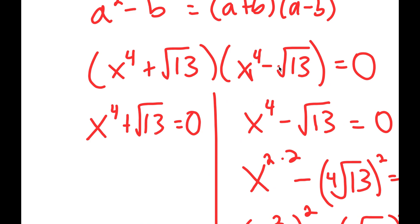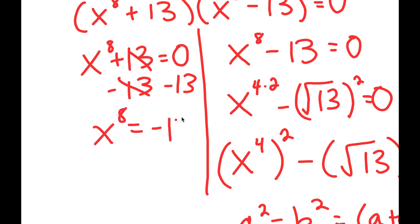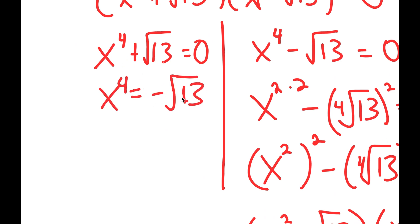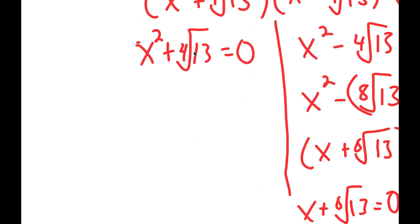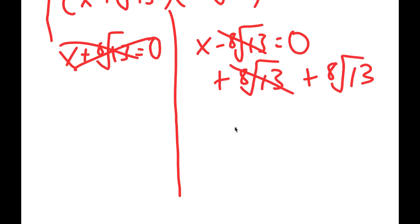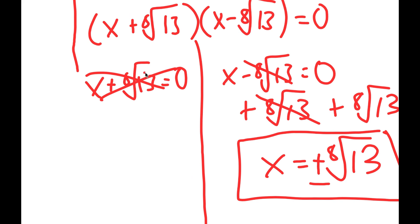Going back to x to the power of 8 plus 13 equals 0: subtracting 13 gives x to the power of 8 equals negative 13, and you can't raise a real number to a power and get a negative result, so this has no real solution. Similarly, x to the power of 4 plus the square root of 13 equals 0 gives x to the power of 4 equals negative square root of 13 — no real solution. The same applies to x squared plus the fourth root of 13 equals 0, and x plus the eighth root of 13 equals 0. So I'm left with x minus the eighth root of 13 equals 0, giving x equals the eighth root of 13, or positive and negative eighth root of 13. Those are my two real solutions. Although the eliminated equations have no real solutions, they do have imaginary solutions.